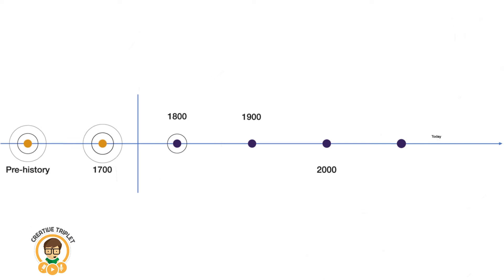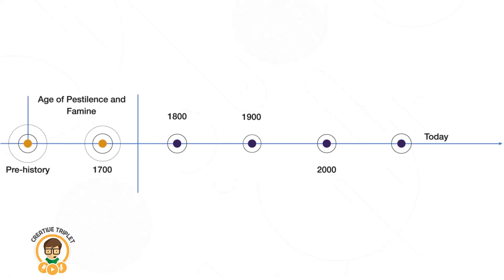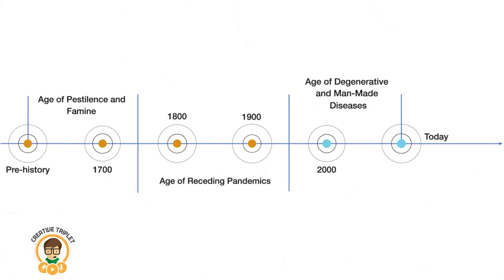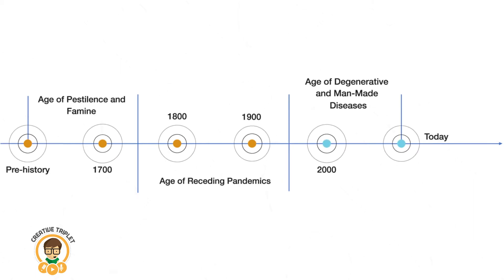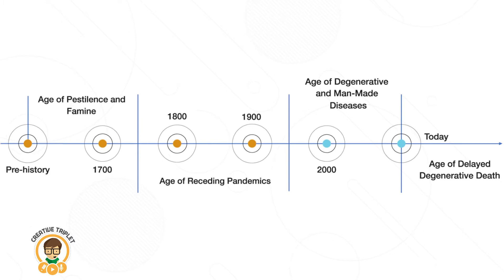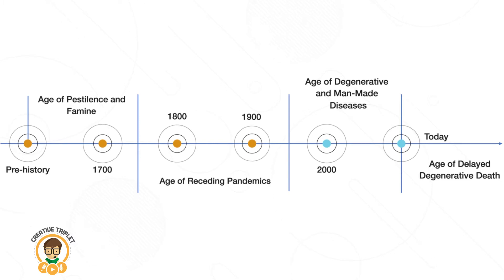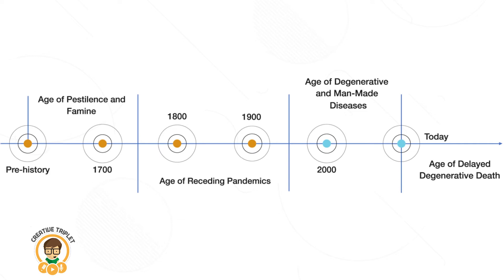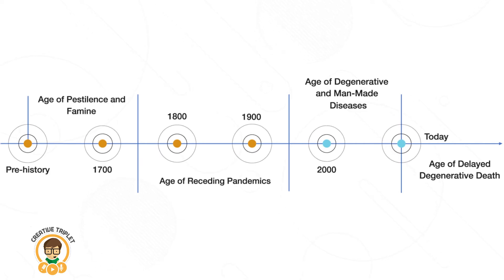The four stages of the epidemiological transition — the age of pestilence and famine, the age of receding pandemics, the age of degenerative and man-made diseases, and the age of delayed degenerative death — were constructed based on trends in cause-specific mortality and life expectancies in high-income countries, mostly in Europe and North America.